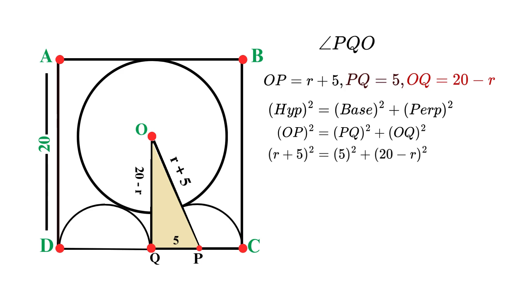Now we need to expand both sides using the binomial expansion formula. Remember, (A + B)² equals A² plus 2AB plus B². Let's start with the left side. (R + 5)² equals R² plus 10R plus 25. For the right side, we have 5 squared, which is 25, plus (20 - R)². Now expand the second part. (20 - R)² equals 400 minus 40R plus R².